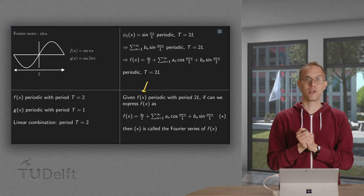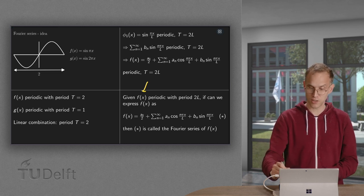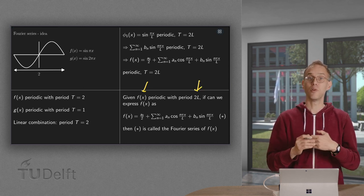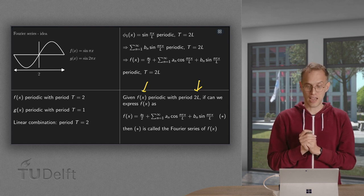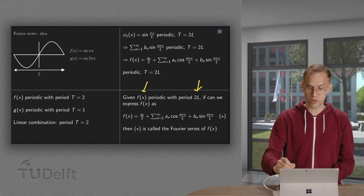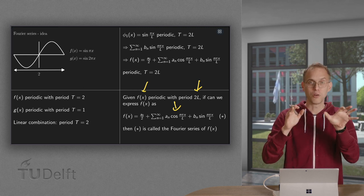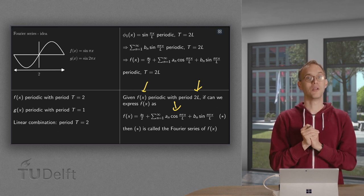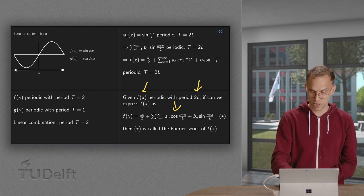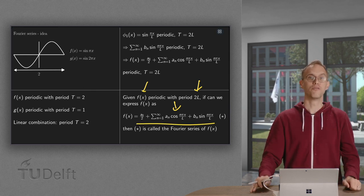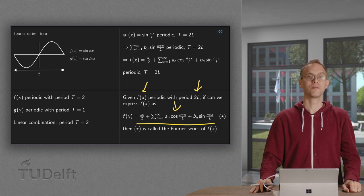Given some periodic function f(x) with period 2l, we wonder, can we write f as a combination of sines and cosines like this? If we can do that, we will learn later when we can do that, but if we can, then the series on the right hand side is called the Fourier series of f(x).